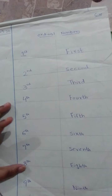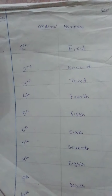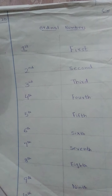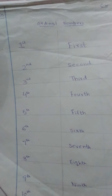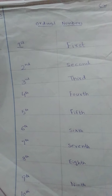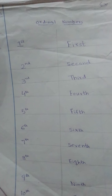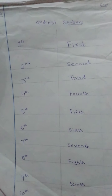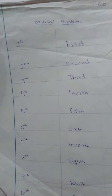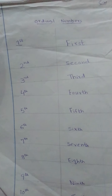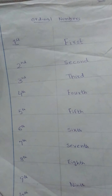What is the spelling of 1st? F-I-R-S-T, first. What is the spelling of 2nd? S-E-C-O-N-D, second. What is the spelling of 3rd? T-H-I-R-D, third. What is the spelling of 4th? F-O-U-R-T-H, fourth. What is the spelling of 5th? F-I-F-T-H, fifth. What is the spelling of 6th? S-I-X-T-H, sixth.